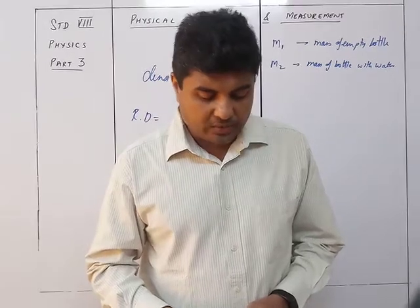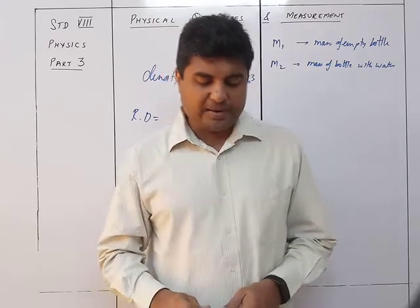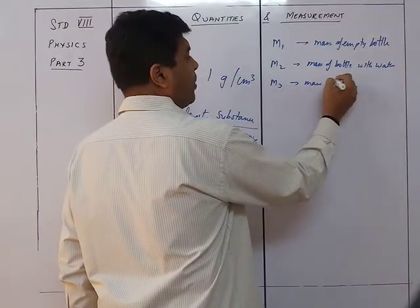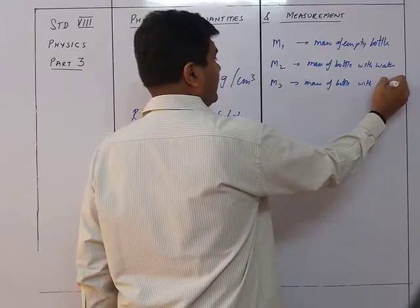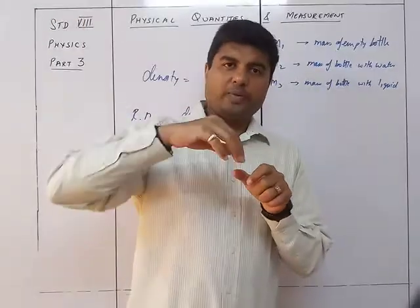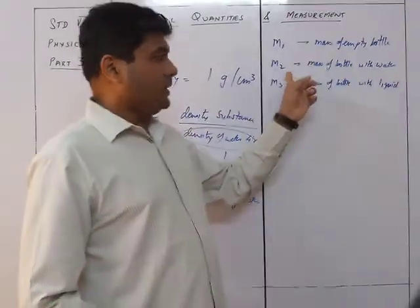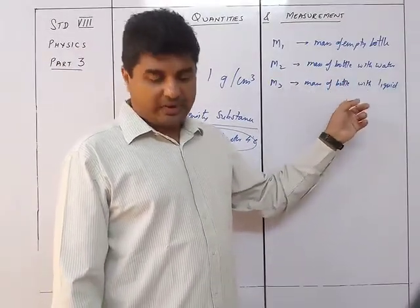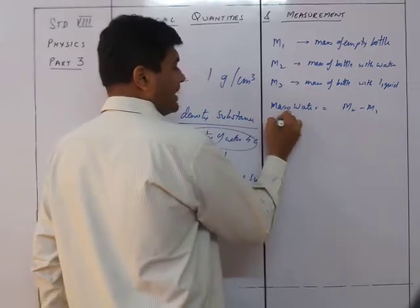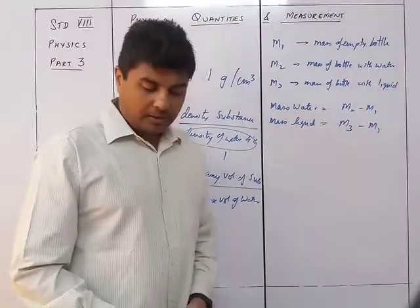Now empty the bottle and dry it. Fill the bottle again with a given liquid and insert the stopper — the extra liquid flows out through the hole in the stopper. Dry and measure the mass of the bottle again — this is m3, the mass of the bottle with liquid. So we have three masses: m1 is the mass of the empty bottle, m2 is the mass of the bottle with water, so mass of water = m2 minus m1, and mass of liquid = m3 minus m1.